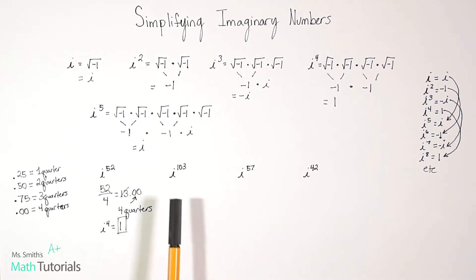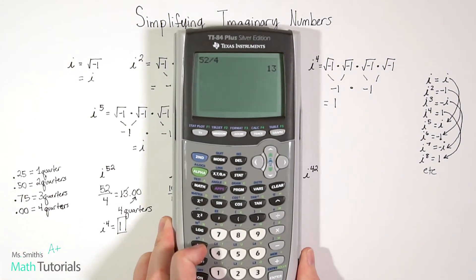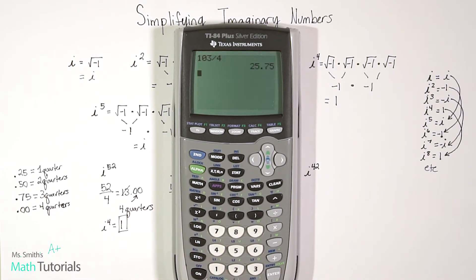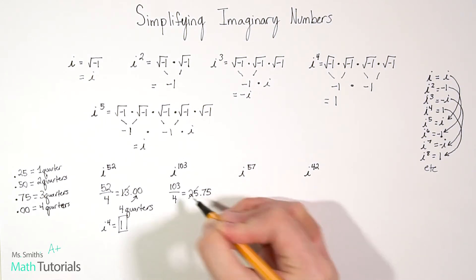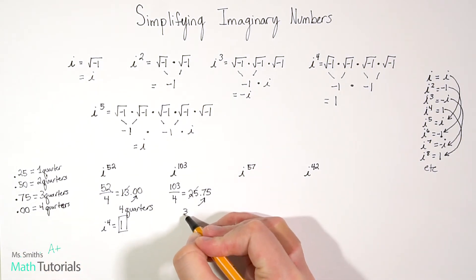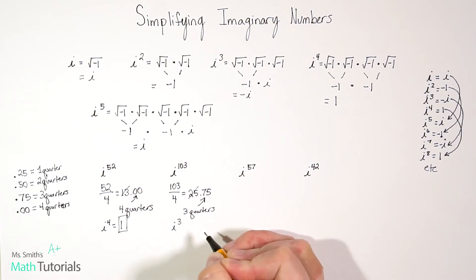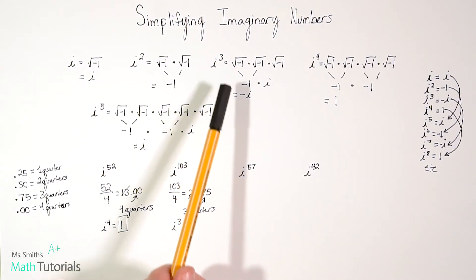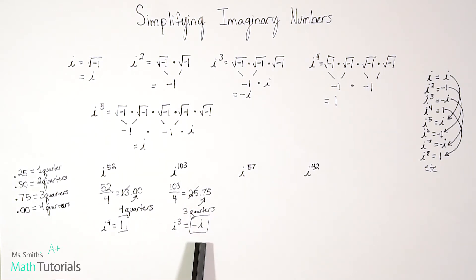Let's try i to the 103rd power. We take 103 and divide by four, which gives us 25.75. We don't care about the 25 — we only care about the decimal. 0.75 is 75 cents, which is three quarters, and three quarters corresponds to i to the third power. We know i cubed is negative i, so i to the 103rd power reduces to negative i.